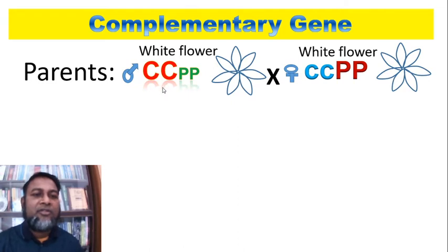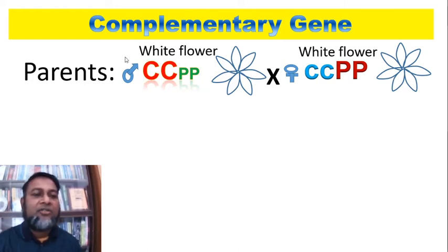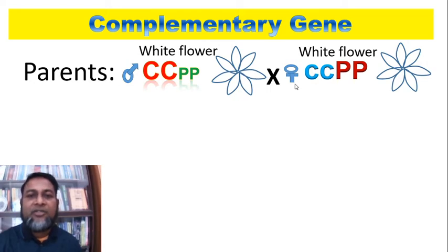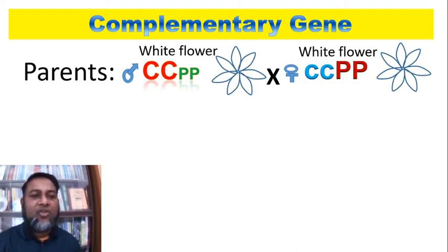We see here two white flowers, but their genotypes are different. The first white flower's genotype is CC pp — its phenotype is white. The other female plant is also a white flower, with genotype cc PP. One pair of genes is dominant and the other pair is recessive.